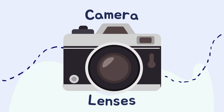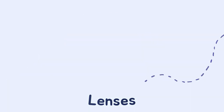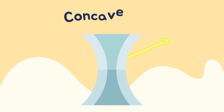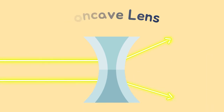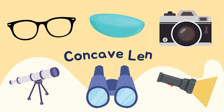These two types of lenses are concave and convex. Concave lenses make the light spread out. Objects that use concave lenses are eyeglasses, contacts, cameras, telescopes, binoculars, and flashlights.